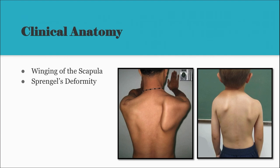For clinical anatomy: winging of the scapula occurs when the serratus anterior is paralyzed. Because of the paralysis, the medial border becomes more prominent and juts out, especially when the hand is pressed against the wall.